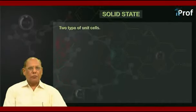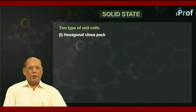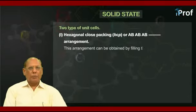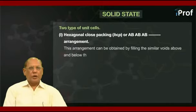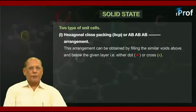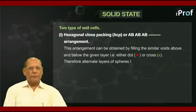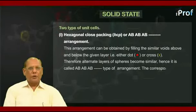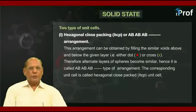First, hexagonal close packing, HCP or AB-AB-AB type of arrangement. This arrangement can be obtained by filling the similar voids above and below the given layer, that is, either red dots or green cross holes. Therefore, alternate layers of spheres will become similar. That's why it's called AB-AB-AB and so forth type of arrangement. The corresponding unit cell is called hexagonal close-packed or HCP unit cell. Both of these are shown in the following figures, A and B.